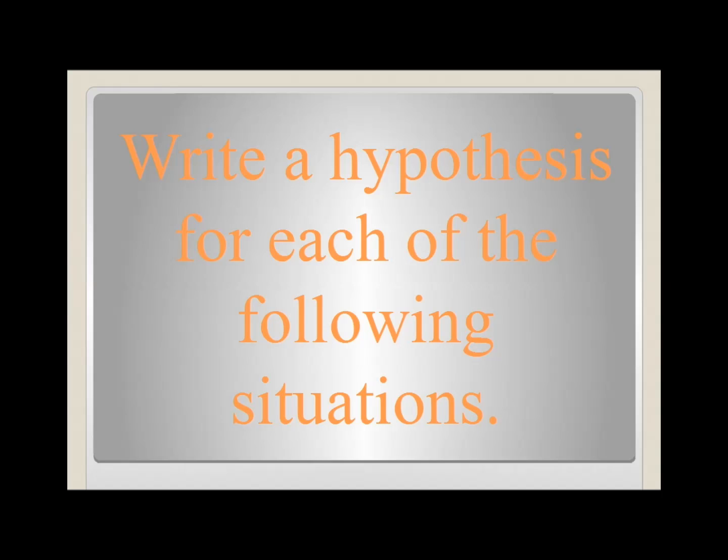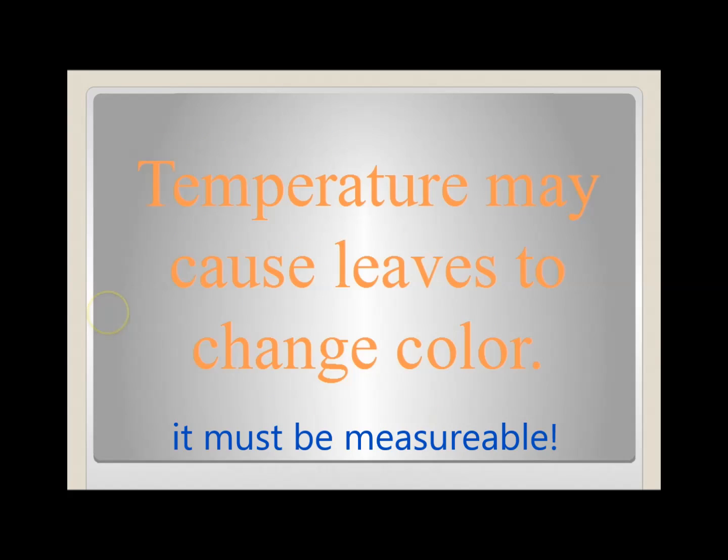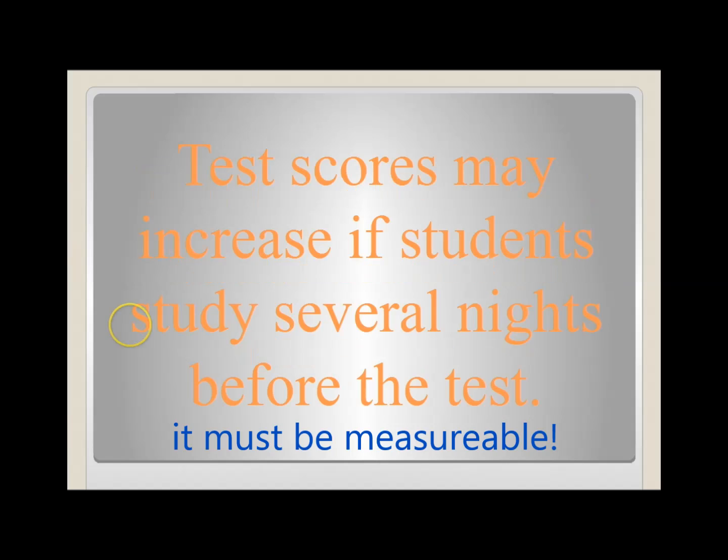So write a hypothesis for each of the following situations. Temperature may cause leaves to change color. Possible hypothesis: If the temperature increases, then the leaves will change color. Or, if the temperature decreases, then the leaves will change color.